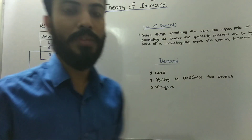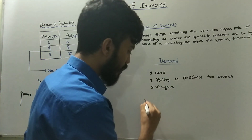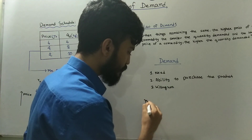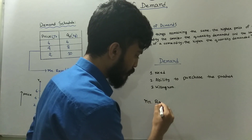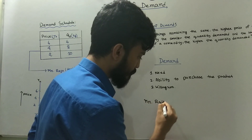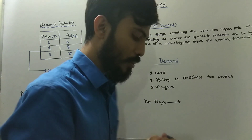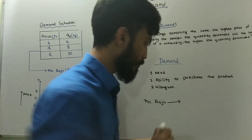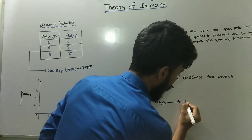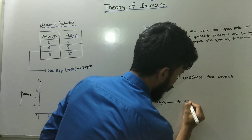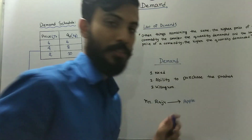Let me talk about this example. Mr. Rajuna — first, they will take apples as the product.